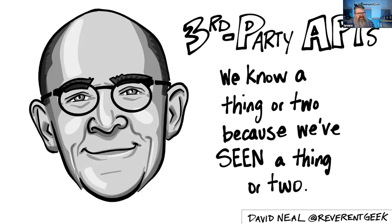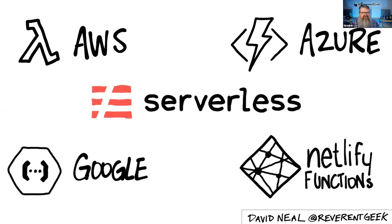If you absolutely need to build your own APIs, consider something like functions as a service — AWS Lambdas, Azure Functions, Google Functions, or Netlify Functions. Functions as a service automatically scale to meet demand and you pay for only what you use, much like a CDN.